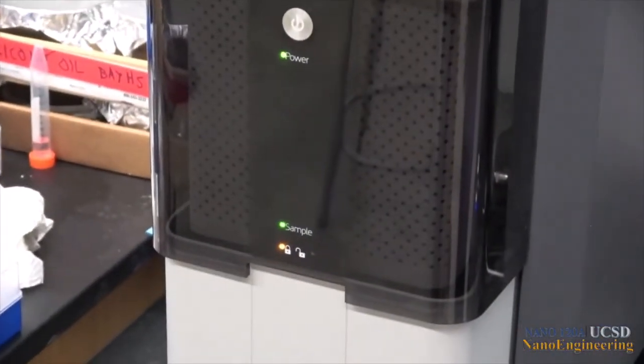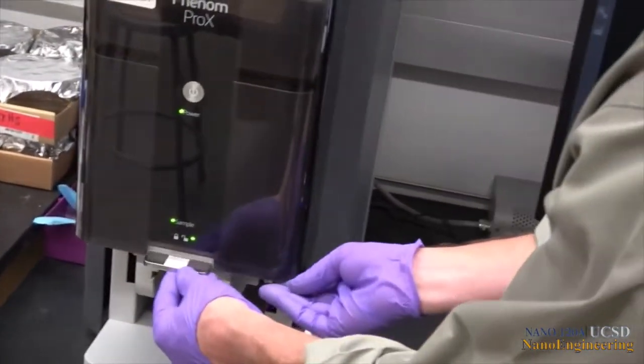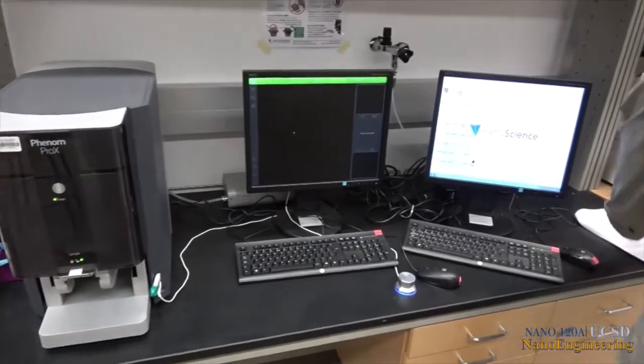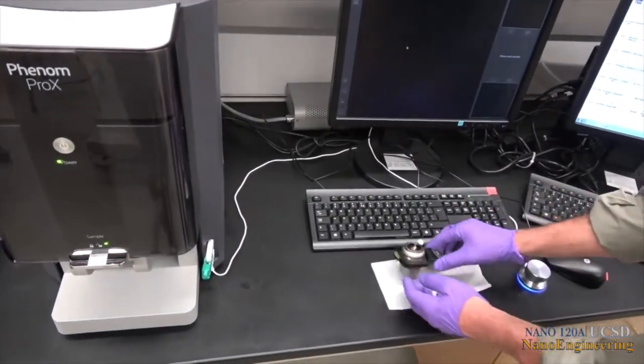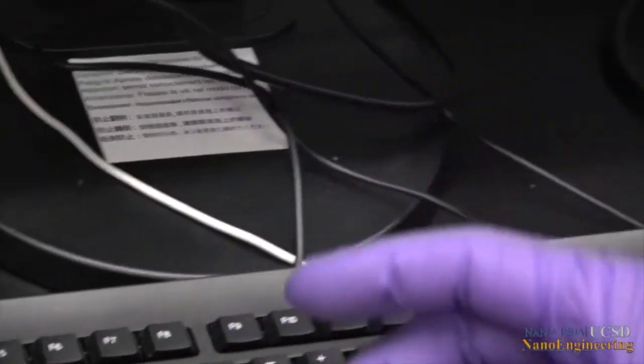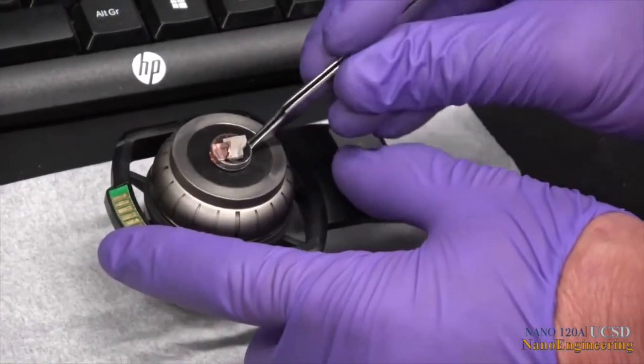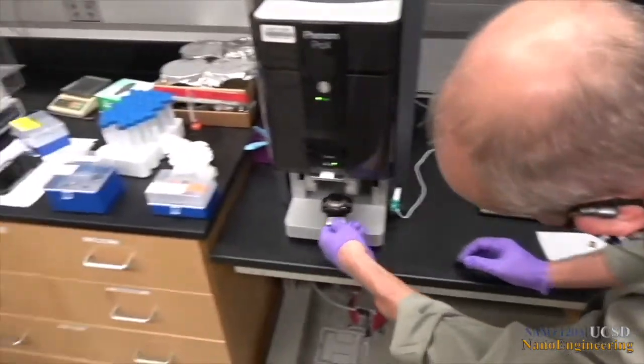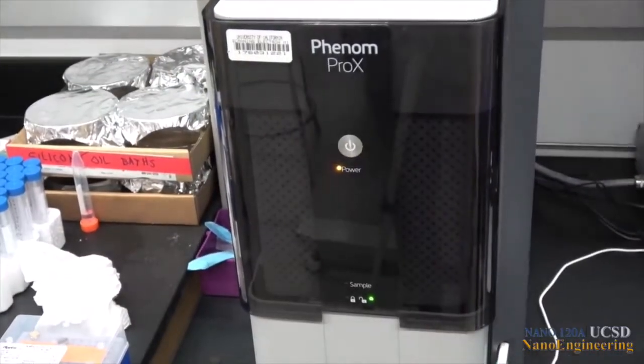When the unlock symbol is green, slide open the door, remove the sample holder. Return the stage to its maximum height by turning the bulb on the sample holder and remove the sample stub from the holder. The sample holder can then be placed at the bottom of the entrance chamber. Close the entrance chamber door and press the power button. It will turn an amber color and the message on the screen will say the tool is in standby mode.